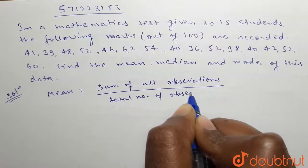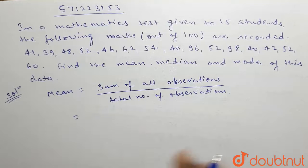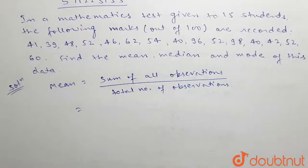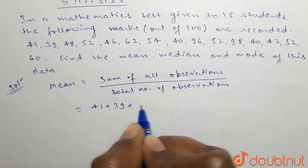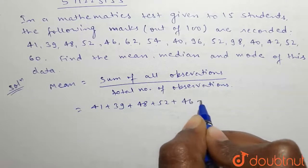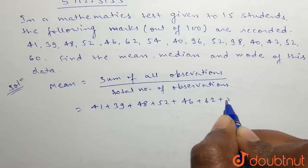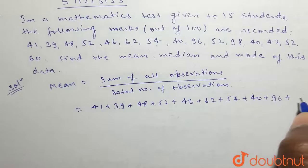The data are: 41 + 39 + 48 + 52 + 46 + 62 + 54 + 40 + 96 + 52.